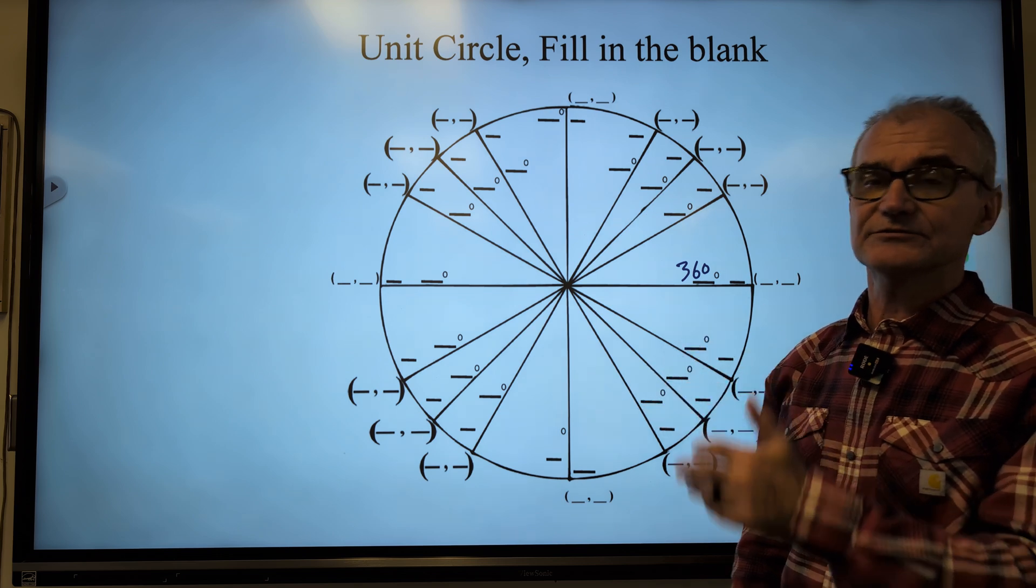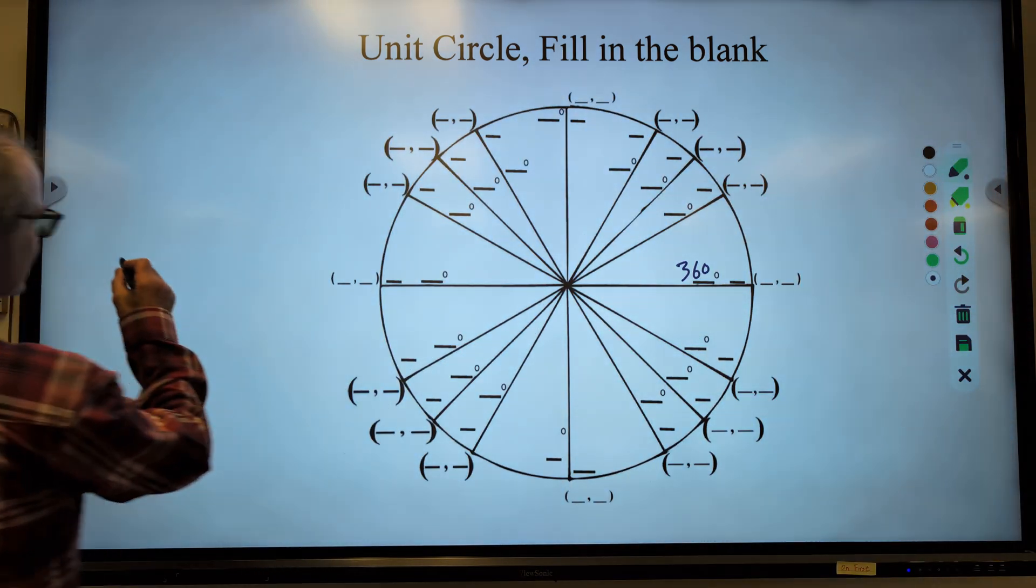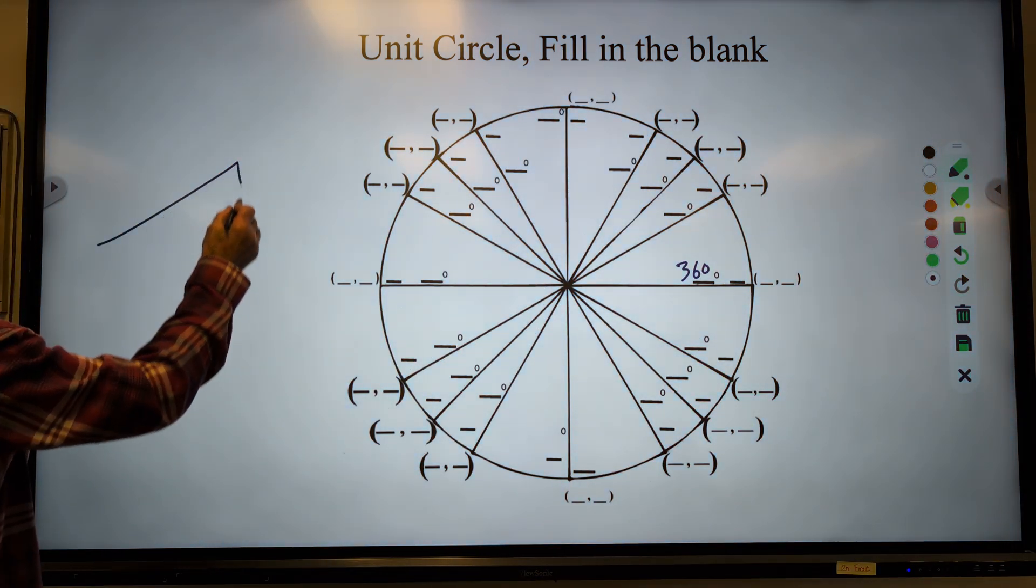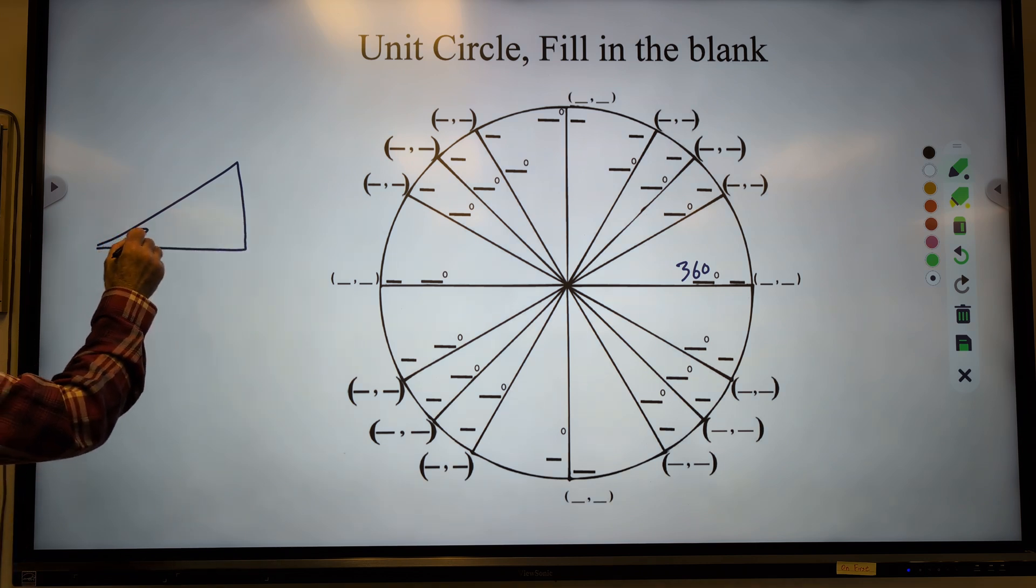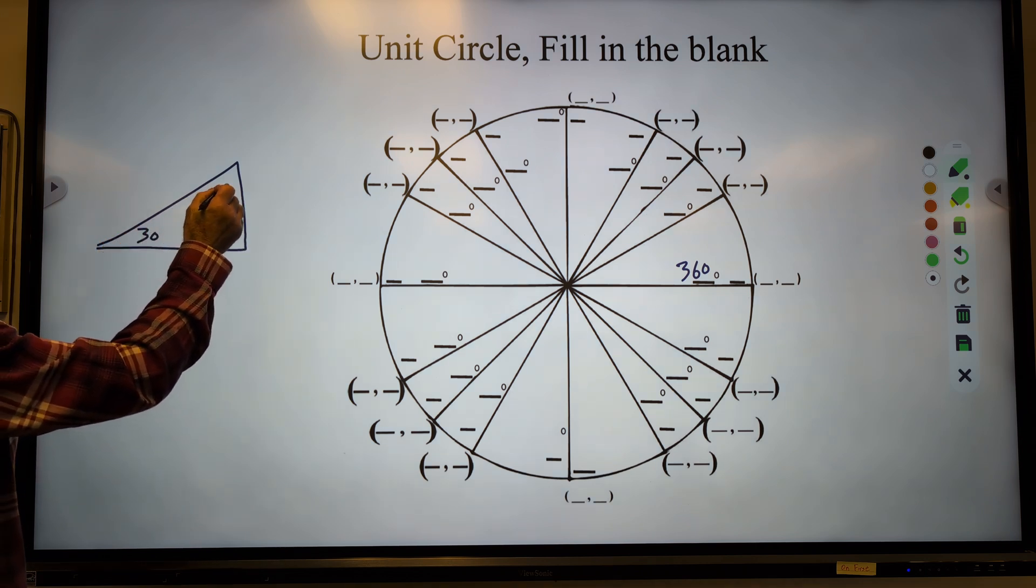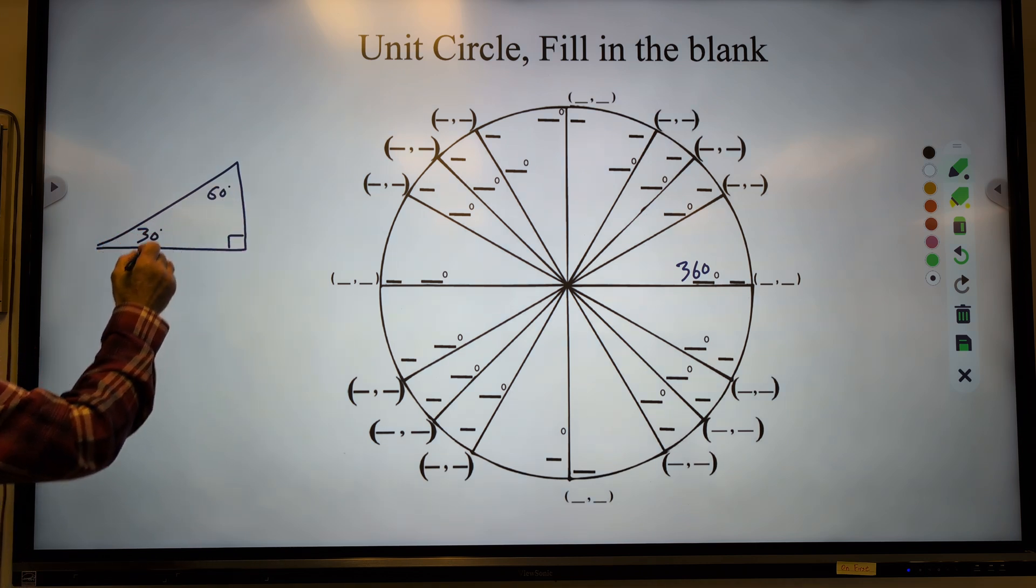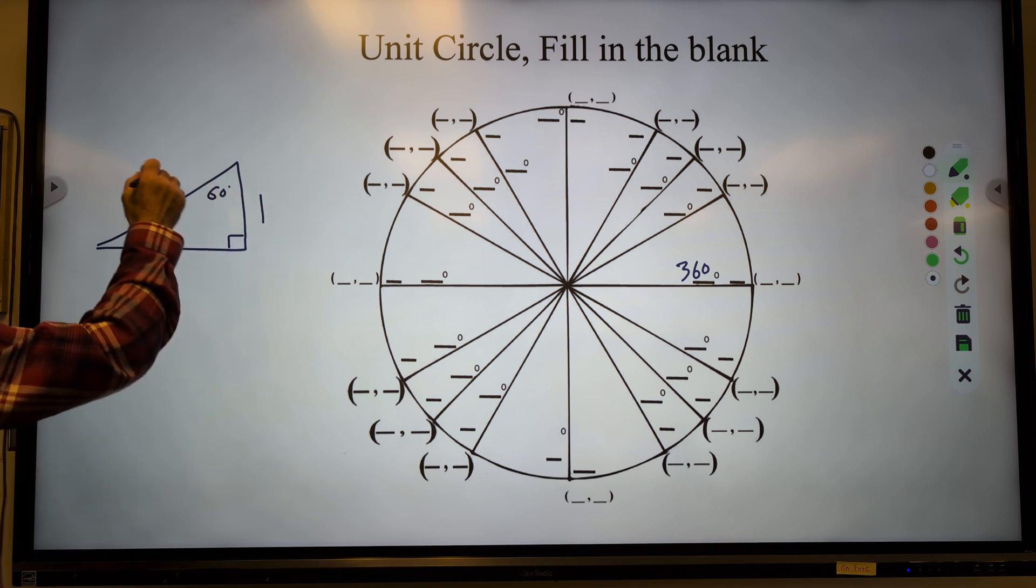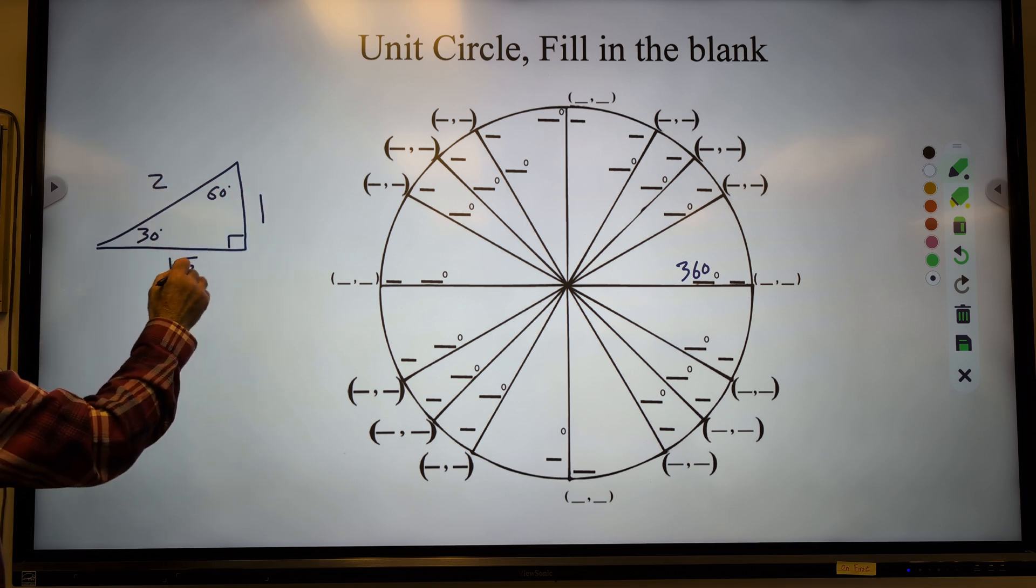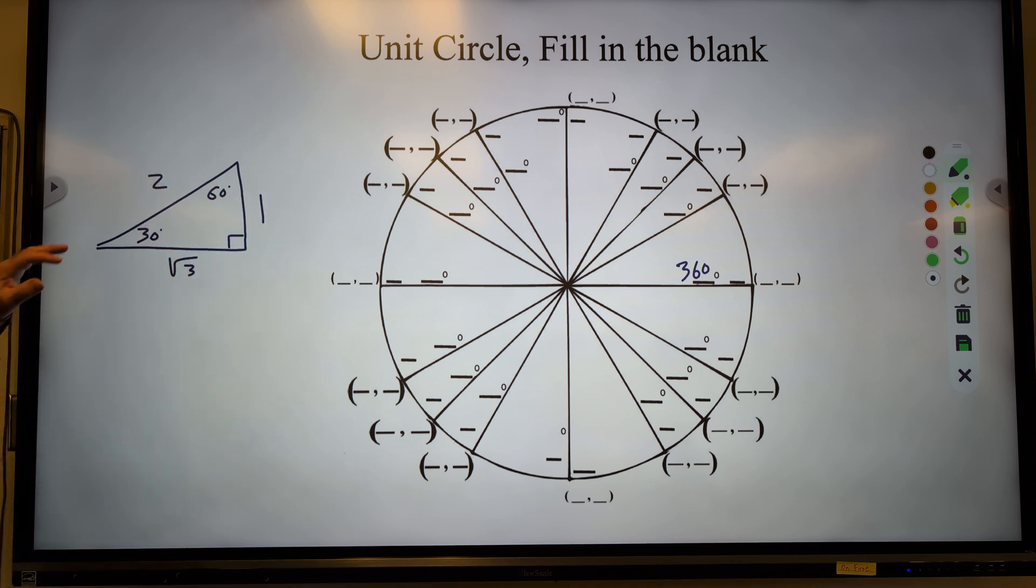So you do need to know two different triangles. These are exact value triangles that you just have to have memorized. The first one is a 30, 60, 90 triangle. The ratios of sides are 1 to 2 to root 3. If you don't have that memorized, then write it down a bunch of times until you do have it down.